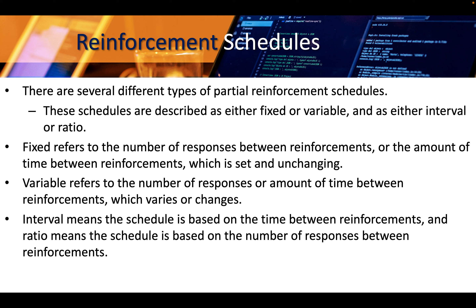A fixed interval reinforcement schedule is when behavior is rewarded after a set amount of time. For example, after major surgery a patient is given an IV drip with patient-controlled painkiller. The doctor sets a limit of one dose per hour — if the patient pushes the button a dozen times, they still only receive a single dose. Since a reward only occurs on a fixed interval, there is no point in exhibiting the behavior more frequently.